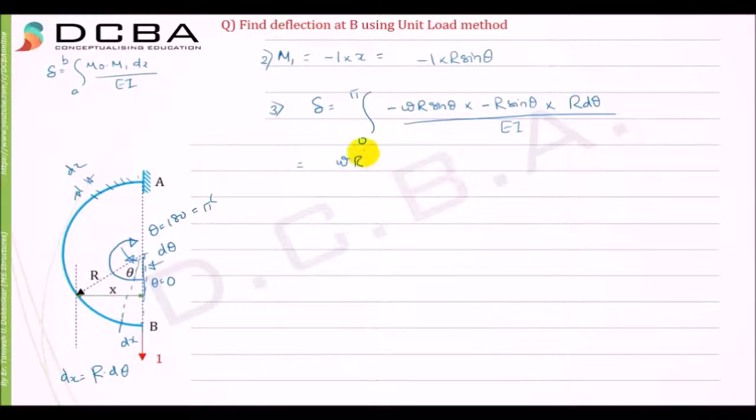Sin squared theta can be converted into 1 minus cos 2 theta divided by 2 into d-theta. This integration going from 0 to pi, so it is equal to wr cubed upon 2EI.